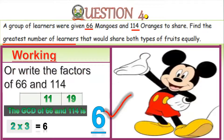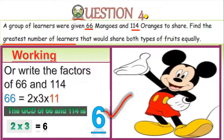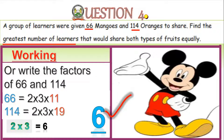Alternatively, write the prime factors: 66 = 2 × 3 × 11, and 114 = 2 × 3 × 19. The common factors are 2 and 3, so 2 × 3 = 6. The greatest number of learners is 6.